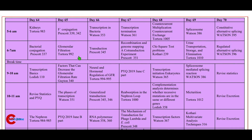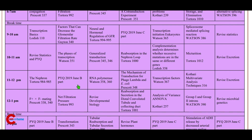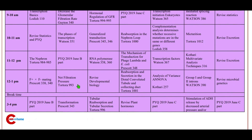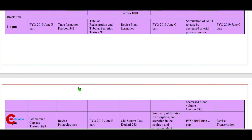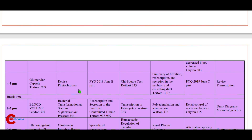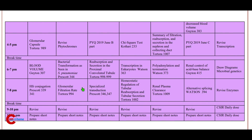Day 65: 5 to 6 a.m. F-dash conjugation press card; 6 to 7 a.m. glomerular filtration; 9 to 10 a.m. factors that can decrease the glomerular filtration rate; 10 to 11 a.m. the phases of transcription (Watts); 11 to 12 p.m. previous year questions; 12 to 1 p.m. net filtration pressure (Tortora); 3 to 4 p.m. transformation press card; 4 to 5 p.m. revise phytochromes; 6 to 7 p.m. bacterial transformation as seen in Streptococcus pneumoniae; 7 to 8 p.m. glomerular filtration rate (Tortora); 9 to 11 p.m. revise and prepare short notes.